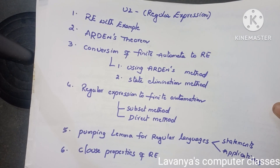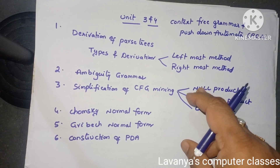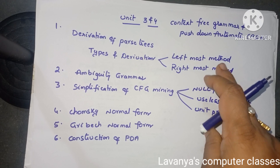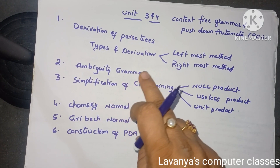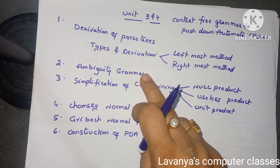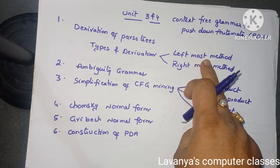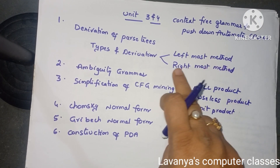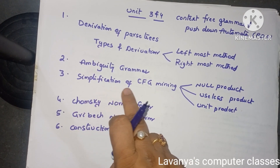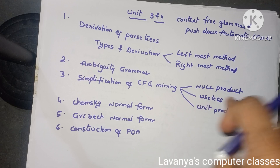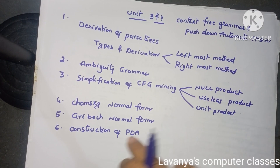Share it with your friends also. Next, unit 3 and 4 covers normalization, context-free grammar, and PDA. The questions include derivation and parse trees, types of parse trees, and derivation methods — leftmost and rightmost. Next is ambiguity in grammar — an important question. Then simplification of CFG: three methods using null productions, useless productions, and unit productions.